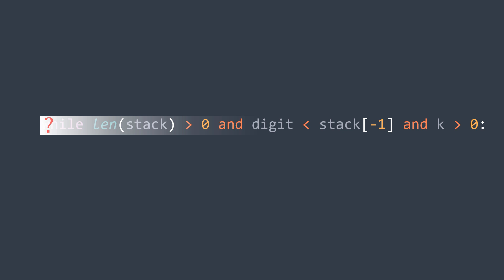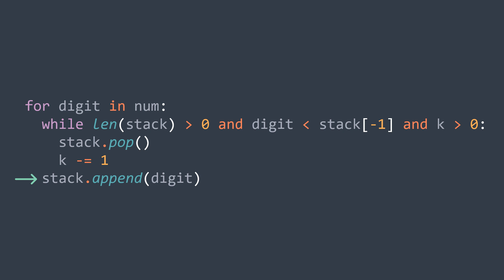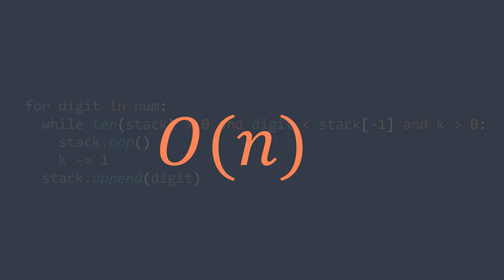Our stack contains digits of num only, and each digit is pushed only once. At each iteration of the while loop, a digit has to be popped from the stack. Because we have n digits, we can only pop n elements total — this is why the while loop will be repeated n times in the whole process in the worst case, not n squared. So the time complexity is O(n).